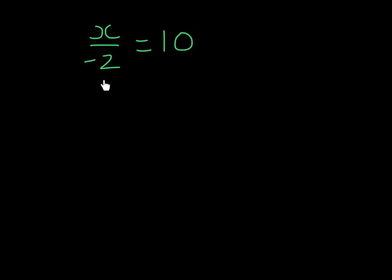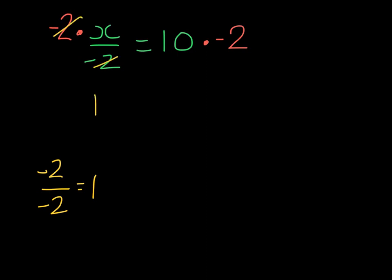Here's our next example and we see we are dividing X by negative 2. The inverse of this would be to multiply by negative 2 on both sides, and I'm going to show this with a dot. Remember that negative 2 divided by negative 2 gives us 1. So on the left hand side we are left with 1 times X, and on the right hand side 10 times 2 is 20. Remember that when multiplying numbers with signs, if we have one of each sign the result will be negative.